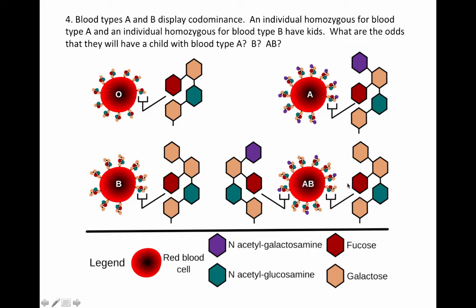If you are blood type A, you can have alleles AA or AO. If you have blood type B, you can be BO or BB. If you're blood type AB, you have to have an allele for blood type A and an allele for blood type B. And if you have blood type O, you have to be OO — you can't have any A or B alleles.